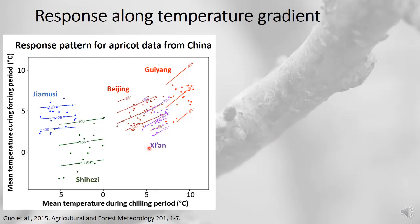We've done another analysis in China for apricots, though different cultivars were likely involved at different locations. We have a stronger temperature gradient here — mean chilling temperatures ranging from below minus 5°C in Tiamusi to about 10°C in Guiyang. We again see this gradient of increasing slope with warmer chilling periods, suggesting that in cold locations spring temperatures are almost the exclusive driver, while at warmer sites the chilling period carries roughly equal weight.